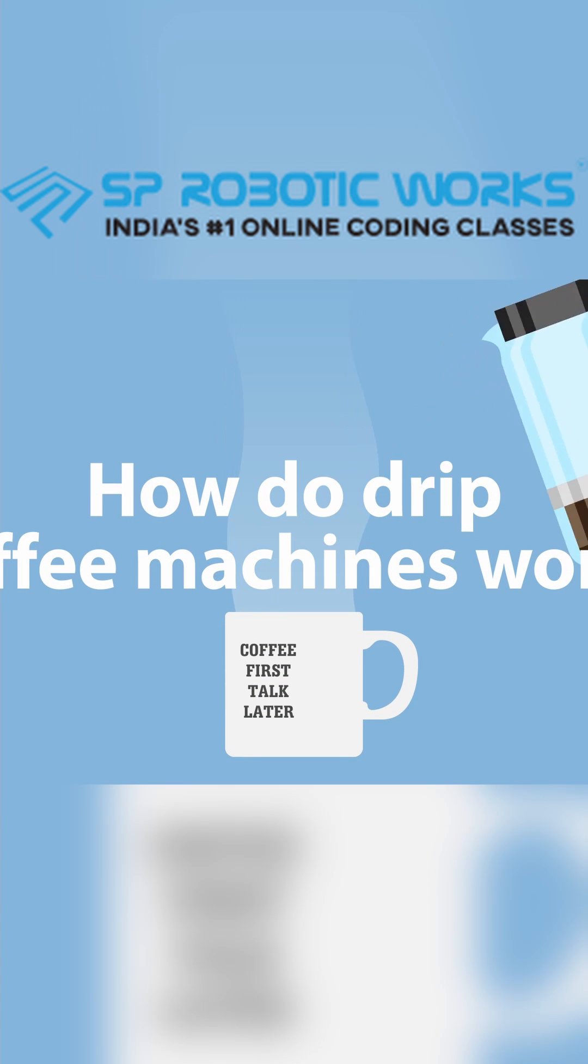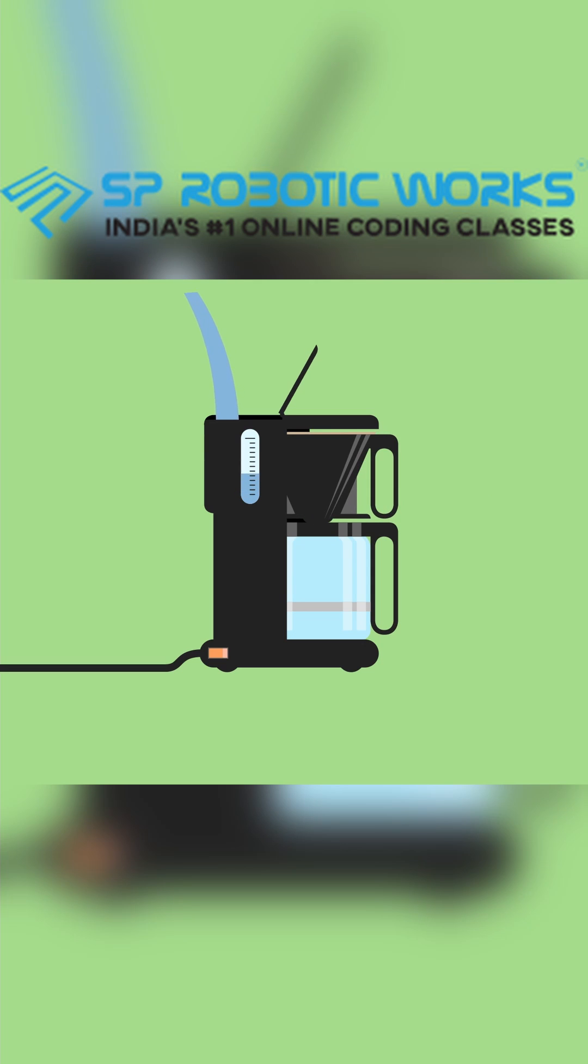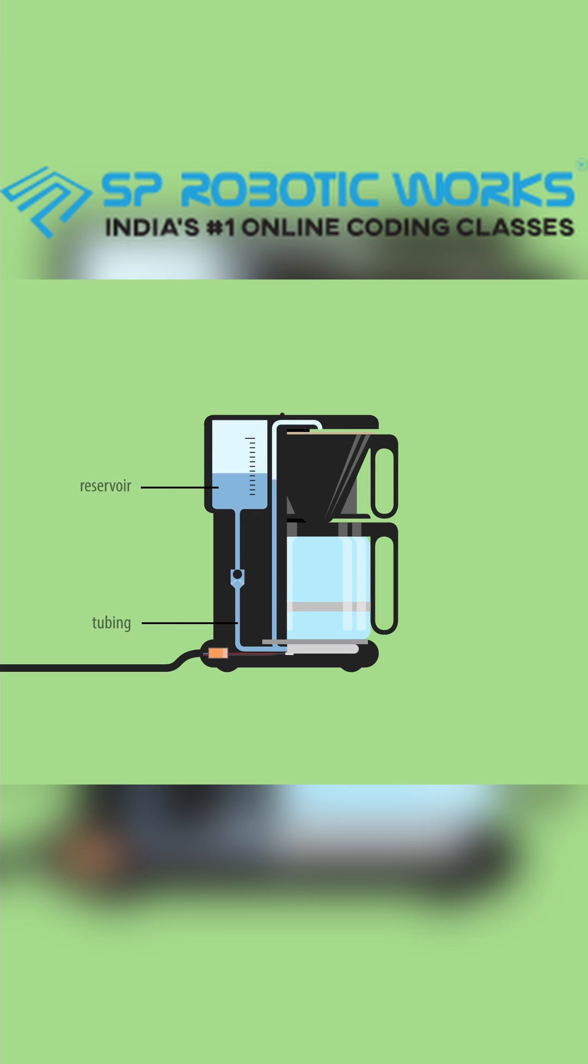How do drip coffee machines work? When you fill up the reservoir with fresh cold water, it immediately flows down and levels out within the appliance.